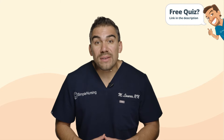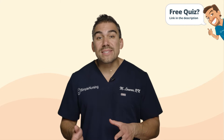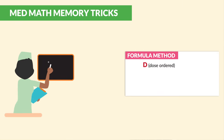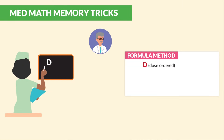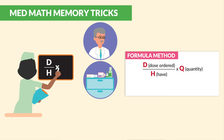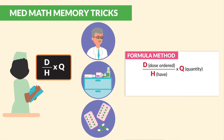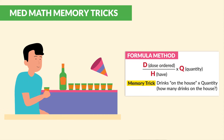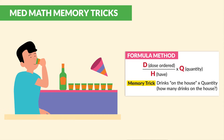Now for the formula method, we say drinks are on the house times the quantity. D for drinks is for doctor's orders. H goes underneath, like on the house, which is what you have on hand — basically what you have in the medication cart. And then X for times, and Q is for quantity. So the memory trick is: drinks are on the house times the quantity.